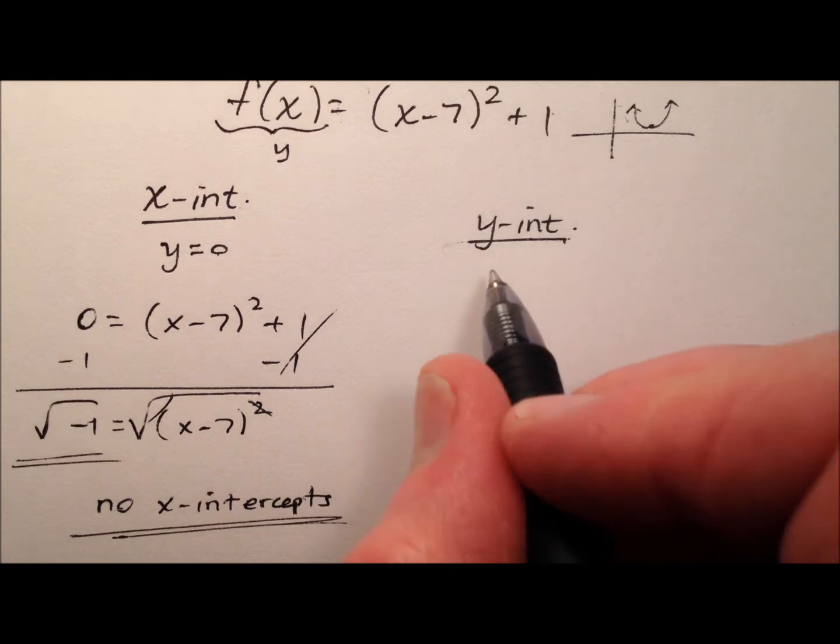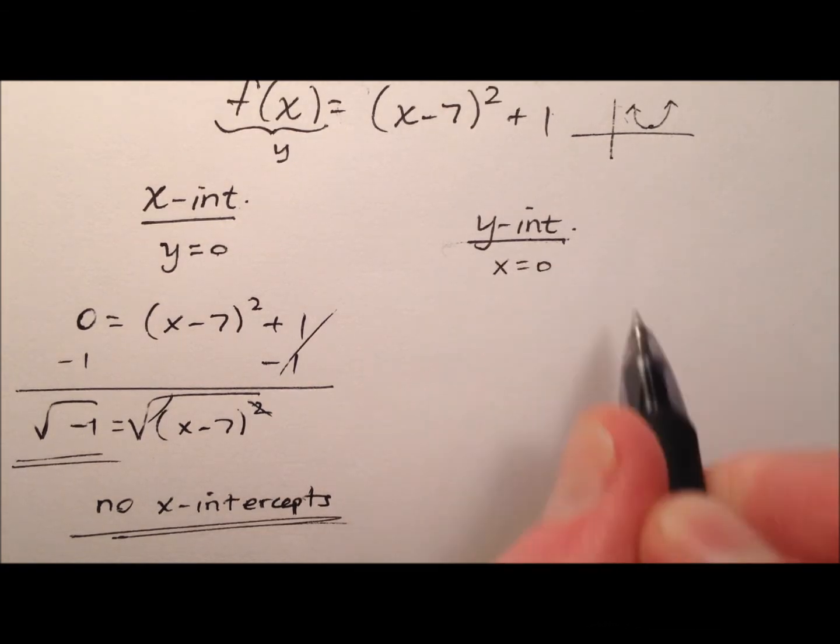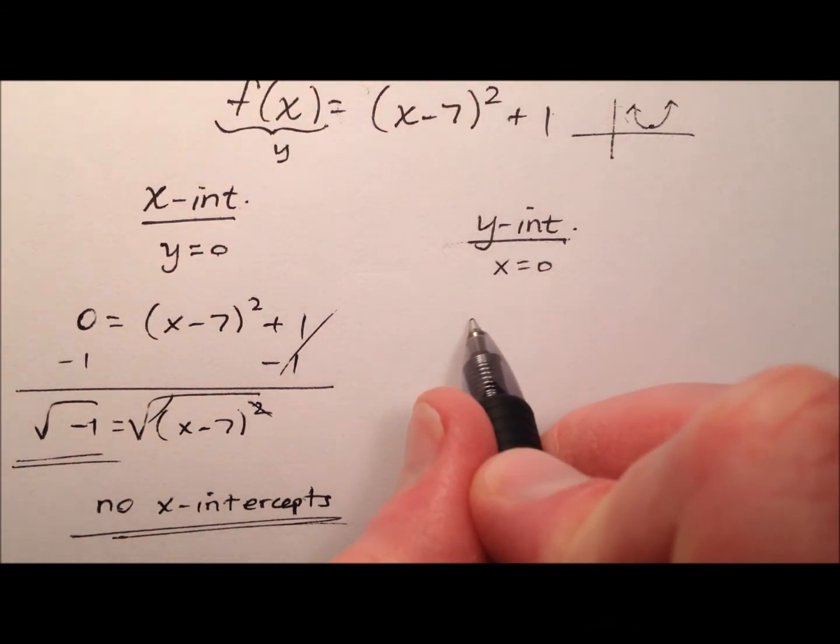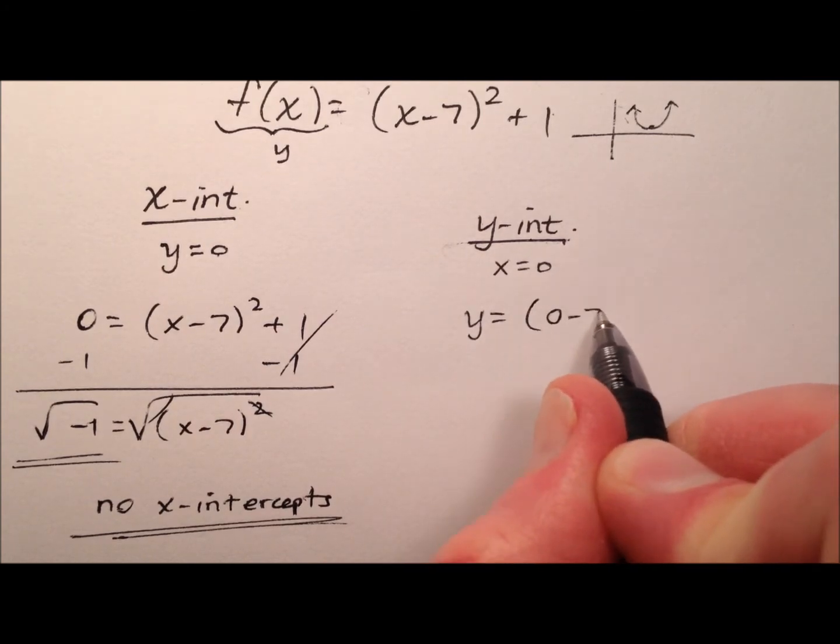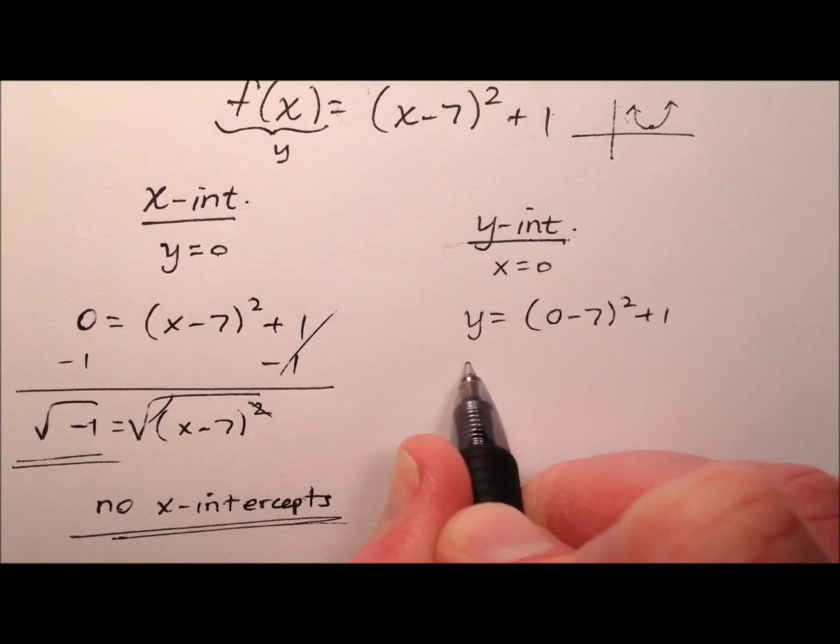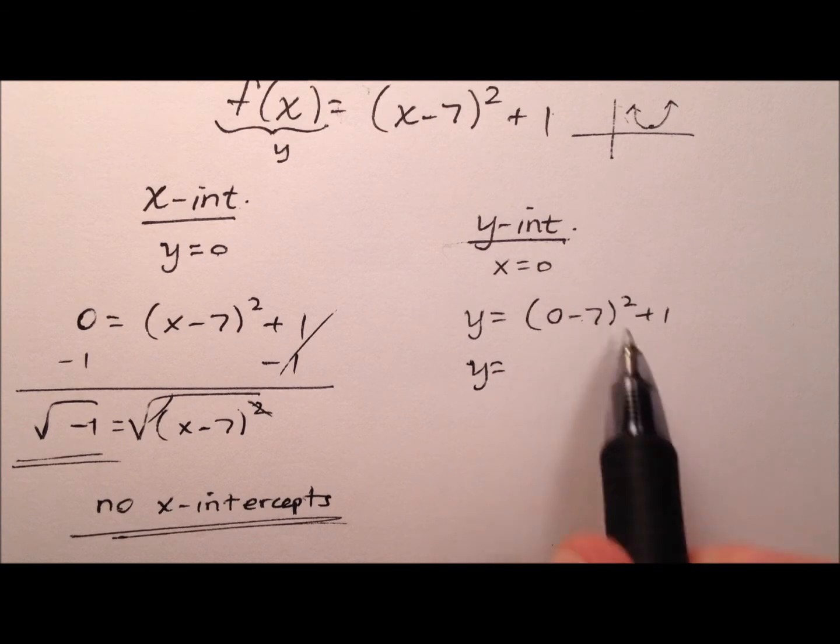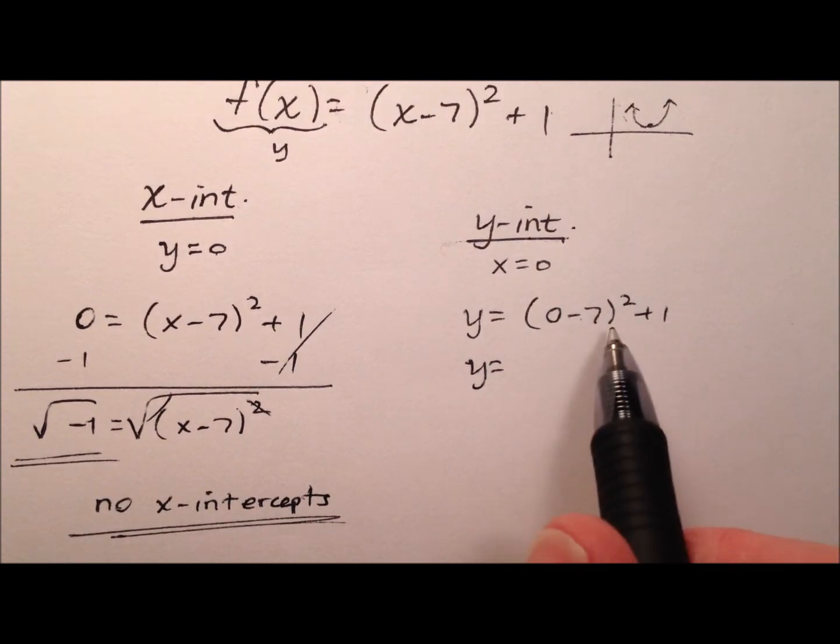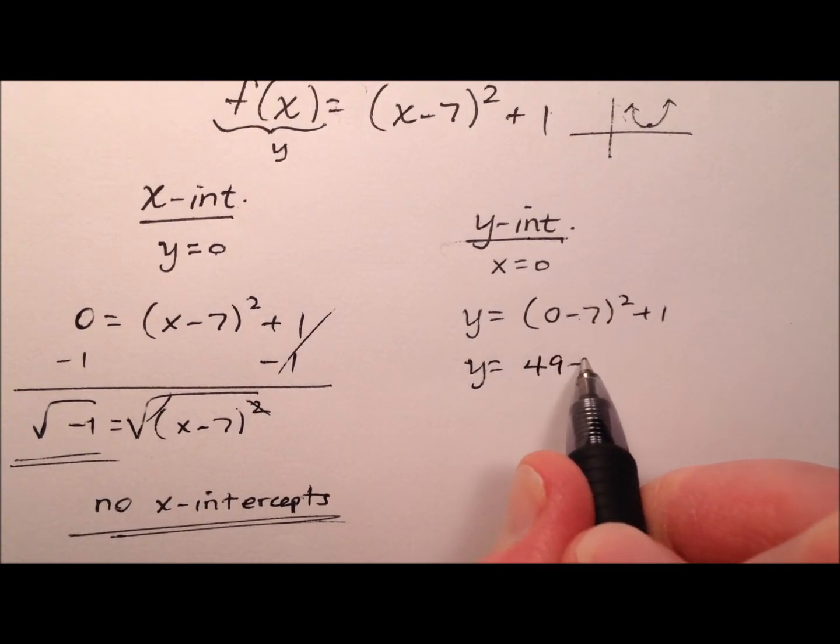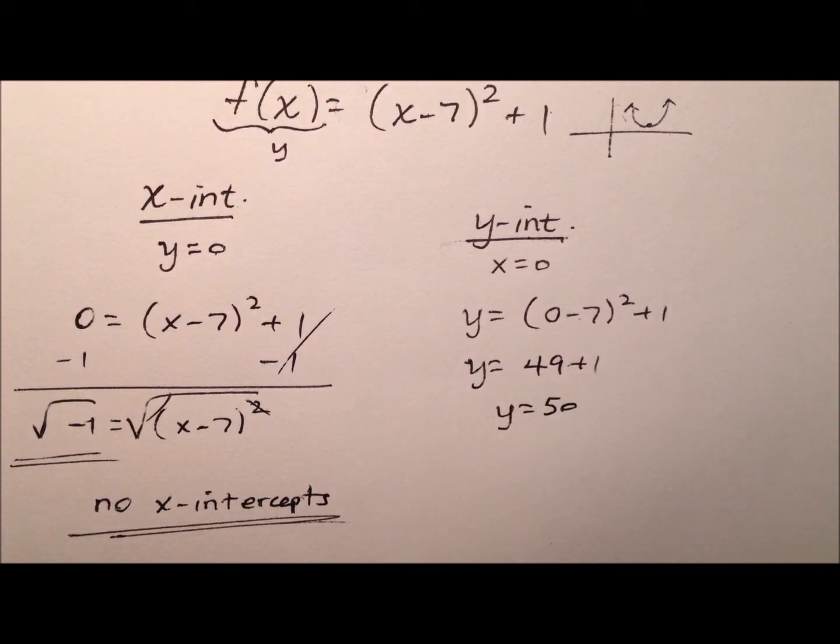Let's go ahead and find this y-intercept. That means we're going to plug 0 in for x and solve. So y equals 0 minus 7 squared plus 1. And 0 minus 7, well, that's negative 7. When I square that, I'll get 49 plus 1. So y equals 50.